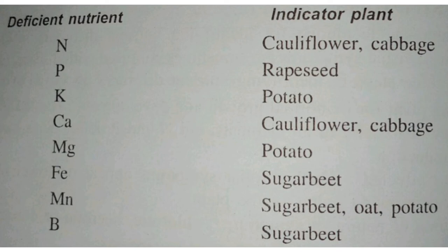The last one is B — Boron. The indicator plant for Boron is also sugar beet. So sugar beet serves as indicator for Iron, Manganese, and Boron.